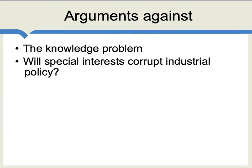Two of the major theoretical arguments against industrial policy are fairly straightforward but also fairly powerful. The first we can call the knowledge problem: do individuals in a government actually know which are the economic sectors or firms which should be encouraged? After all, these are bureaucrats and they're not necessarily in the best position to judge what will be a successful entrepreneurial venture. There are plenty of examples where governments have tried to encourage particular sectors, those sectors turned out to be failures, and it was a mistake for the government to think it was the one to know which sectors really should be advanced. The second argument asks the simple question: will special interests corrupt industrial policy?